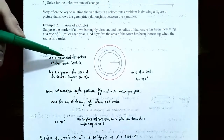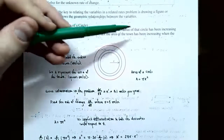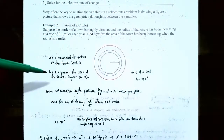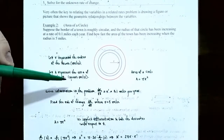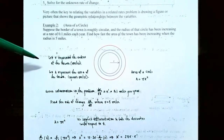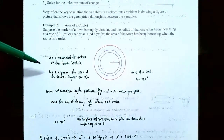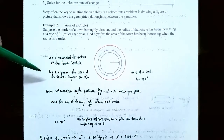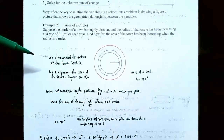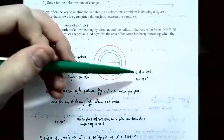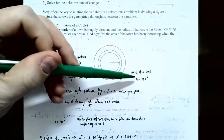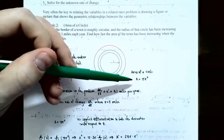Let r be the radius of the town in miles, and let A represent the area of the town in square miles. Step two: what equation involves radius and area of a circle? It's A equals pi r squared. This is the equation we need for this problem.